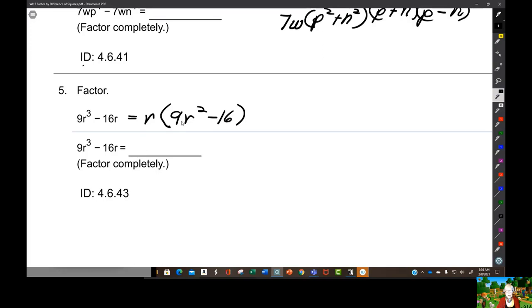Well, 9r² is 3r squared. Three squared is 9, and r² is r². So this is going to be r times (3r)² minus 4².